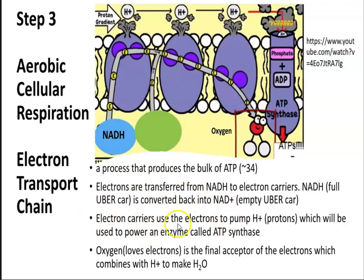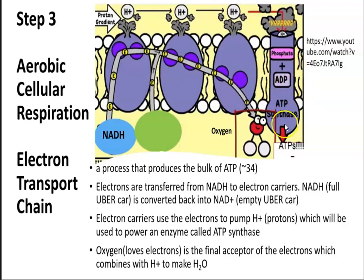Electron carriers use the electrons to pump hydrogen ions or protons, which will be used to power an enzyme called ATP synthase. ATP synthase converts phosphate plus a molecule of ADP to form ATP. Oxygen loves electrons and is the final acceptor of the electrons, which will combine with our hydrogen to make water, H2O.